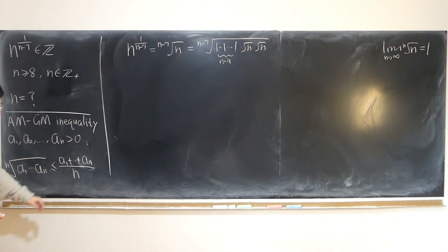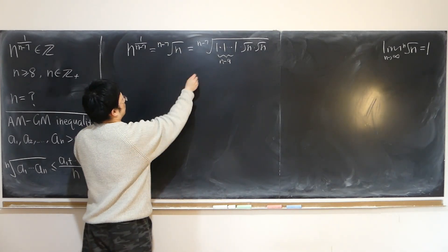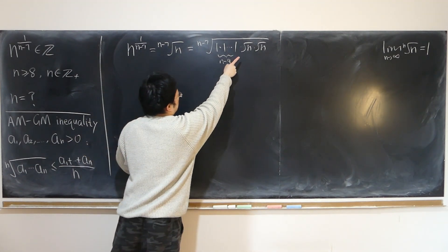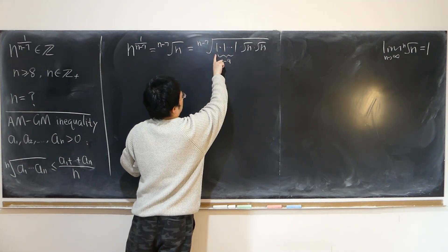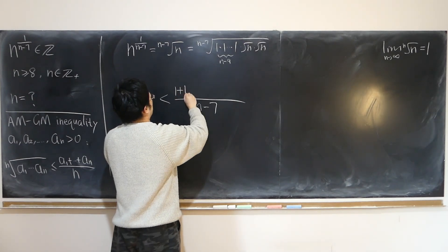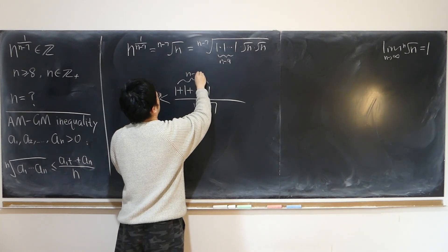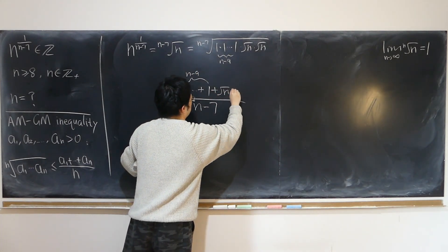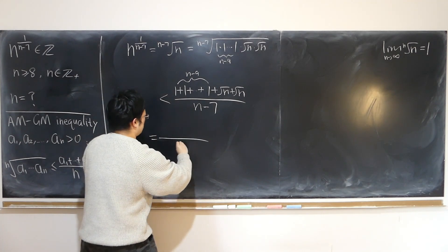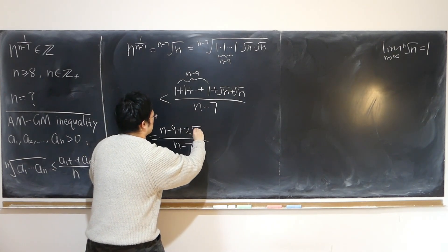By AM-GM: 1 times 1 is less than... I have (n minus 7) numbers in total, so this is strictly less than — because n is greater than or equal to 8, this cannot equal 1. So with (n minus 7) numbers: 1 plus 1 all the way up, with (n minus 9) ones plus square root of n plus square root of n, divided by (n minus 7), giving (n minus 9) plus 2 times square root of n.